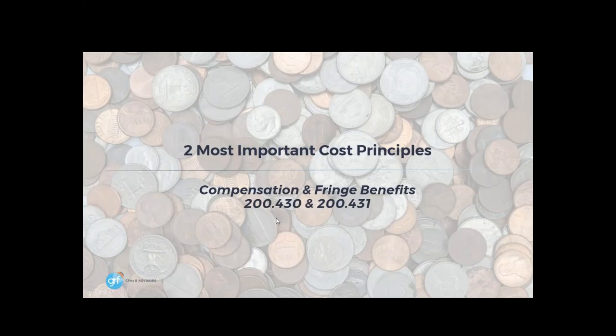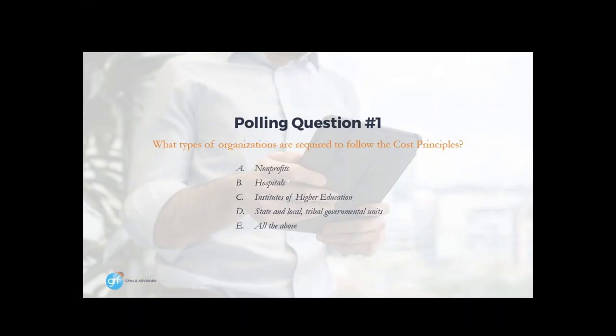Now we'll begin to cover the most important cost principles: compensation and fringe benefits. Our first polling question is: what types of organizations are required to follow the cost principles? Is it A, nonprofits? B, hospitals? C, institutes of higher education? D, state and local tribal governance units? Or E, all of the above?